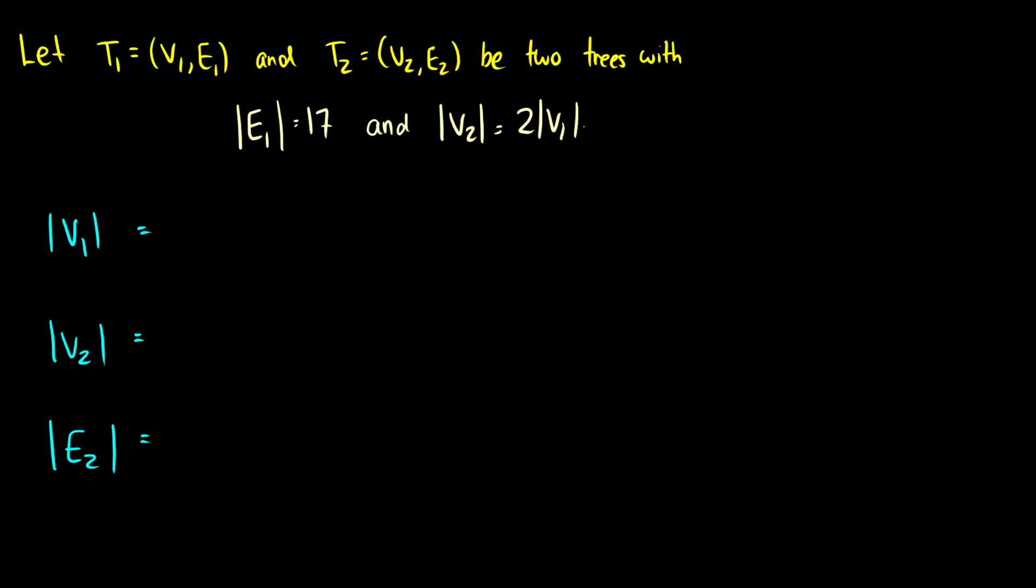Well, remember our properties, E is equal to V minus 1. So E1 is 17. So E1 is equal to 17. This means that V1 has to be equal to 18. Because it's the number of edges plus 1. So V1 is equal to 18.